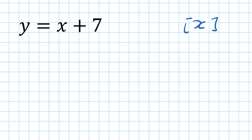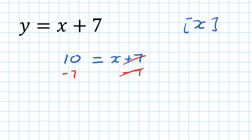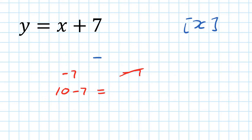Just to recap, let's say y is 10. So 10 equals x plus 7. What do you normally do? That's right, you minus 7 on both sides — that cancels out. So 10 minus 7 equals x, then x is 3. That's how you solve the equation.